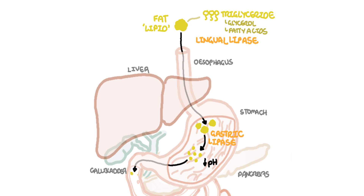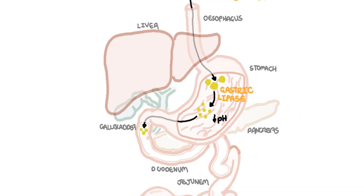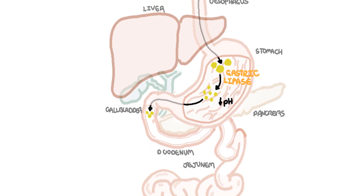Fat droplets and the acidity from the stomach will stimulate the small intestinal cells to produce two important hormones: cholecystokinin, CCK, and secretin.